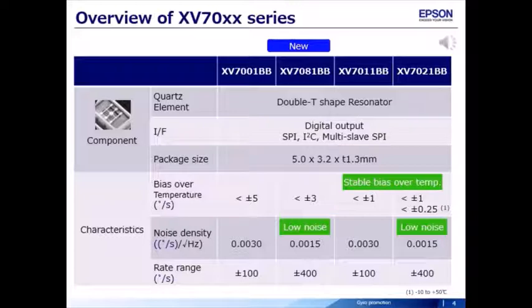This table shows overview of Gyro Sensor XV-7000 Series. XV-7000 Series utilizes the quartz with double T-shape sensing element which provides digital output. All XV-7000 Series are offered in 5.0 x 3.2 mm package.